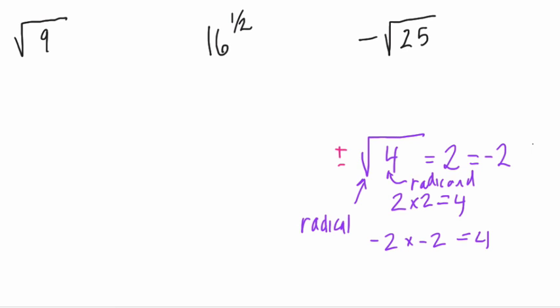But anyway, in this problem they're clear they want us to find both roots for each of these. So what do we do? Well, for the square root of 9, both roots we get positive and negative 3, right? Of course, because 3 squared is 9, but so is negative 3. Negative 3 times negative 3, that's equal to positive 9.